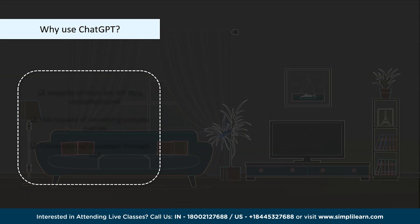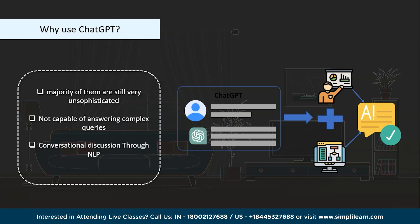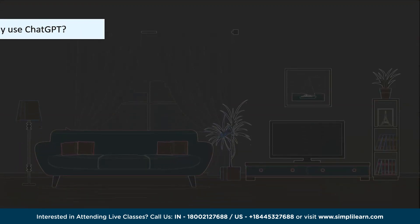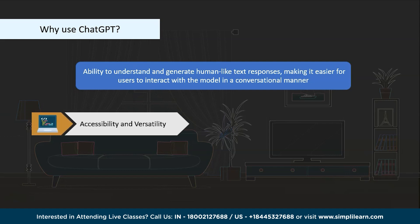Let's understand why we use ChatGPT. Chatbots have been a source of interest for decades, but the majority are still unsophisticated and not capable of answering complex queries or resolving customer issues. However, the world of NLP is approaching a new chapter with ChatGPT's capacity to carry a discussion through several questions and generate software code. One of the most significant use cases is natural language understanding — its ability to understand and generate human-like text responses makes interaction more conversational.